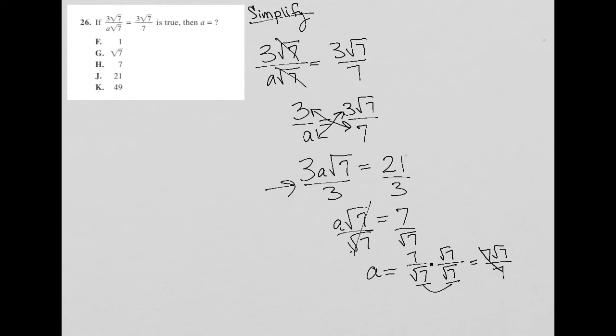And then the sevens will cancel out. Seven divided by seven is one. So therefore, a is really just a square root of seven, which tells you that my answer is choice G.